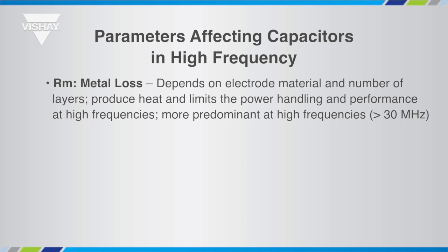The metal loss is a pure resistive loss due to the resistivity of metal electrodes, terminations, barrier layers, etc. The total metal loss depends on the electrode material resistivity and number of layers. This parameter is more dominant at higher frequencies — above 30 MHz — where the skin effect reduces the effective conductor area, thus increasing their resistance.